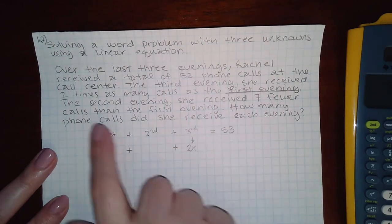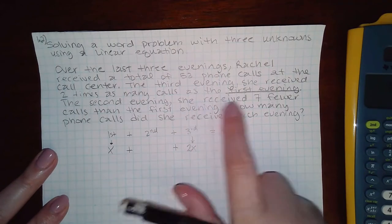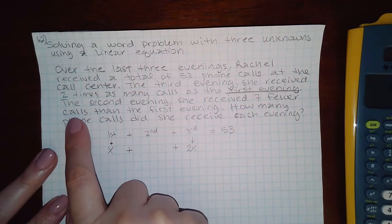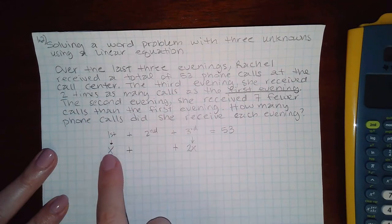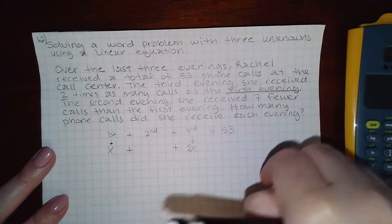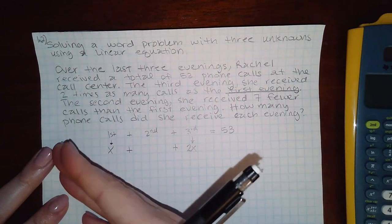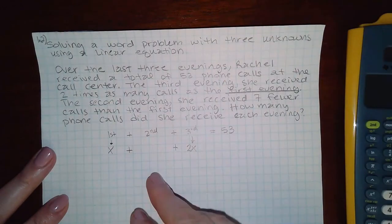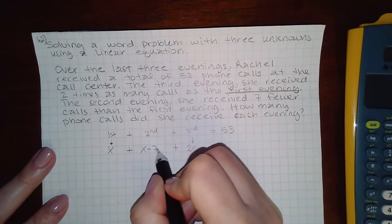Then the next sentence says the second evening, so now they're talking about this evening, she received seven fewer calls than the first evening. So again, they're comparing it to the first evening. Fewer means less or subtract. So if I had 10 calls on the first day, then that means if I subtract seven, I'll have three calls on the second day. So this needs to be x minus seven.